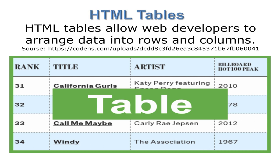HTML table allows a web developer to arrange data into rows and columns. You can see here in this slide, the table is in the bottom part of this slide, where we have four different columns and five different rows. When we have to draw this type of table in HTML, we have to write some HTML code.